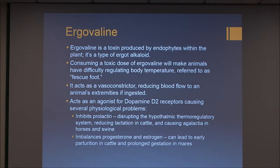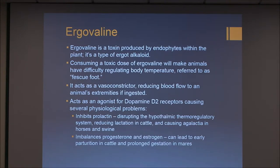Consuming a toxic dose of ergovaline makes animals have difficulty regulating their body temperature. This is called fescue foot. It also acts as a vasoconstrictor, reducing blood flow to an animal's extremities when ingested. To get more specific, it's an agonist for dopamine D2 receptors, and this causes a couple of problems. First, it inhibits prolactin, and this causes a disruption of the hypothalamic thermoregulatory system, hence why it causes difficulty regulating body temperature.